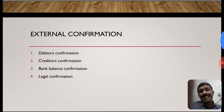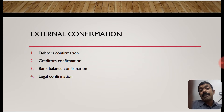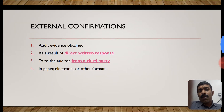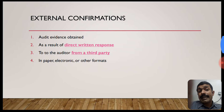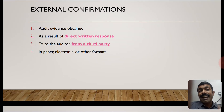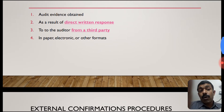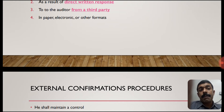What are the external confirmation parties? A third party external to the organization includes the following: debtors confirmation, creditors confirmation, bank confirmation, and legal confirmations. What is an external confirmation? It is audit evidence obtained as a direct written response to the auditor from a third party. It may be in paper form or in another form.